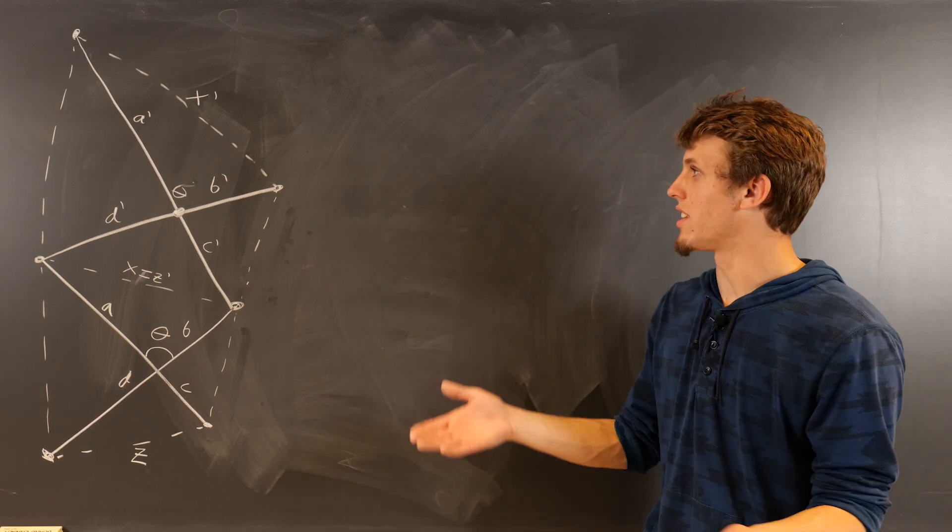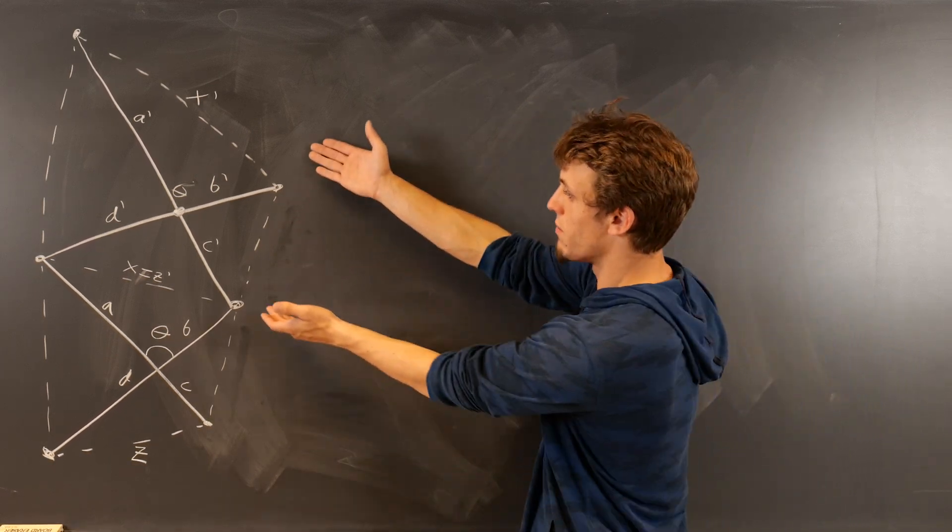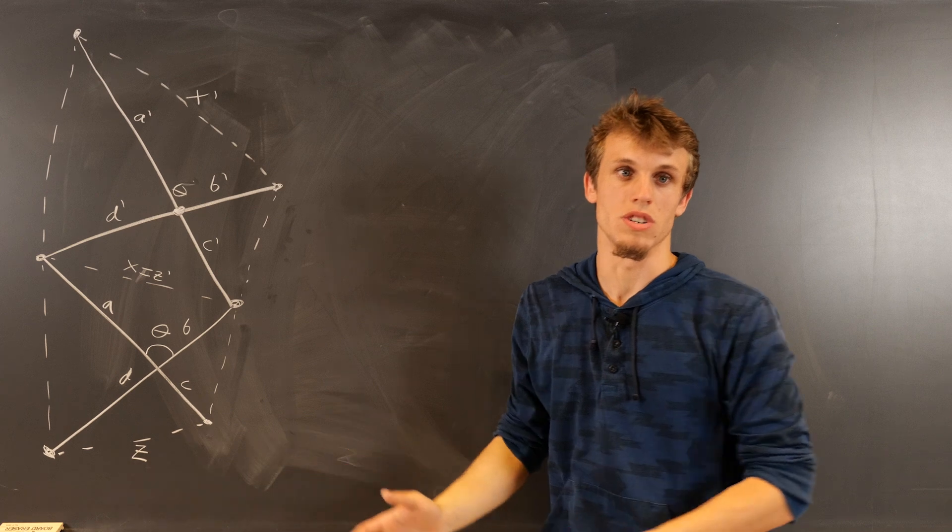And the scaling factor is found by taking the ratio of this side to this side. How do we know? Well, that's exactly what we've done. We've matched the sides to each other.